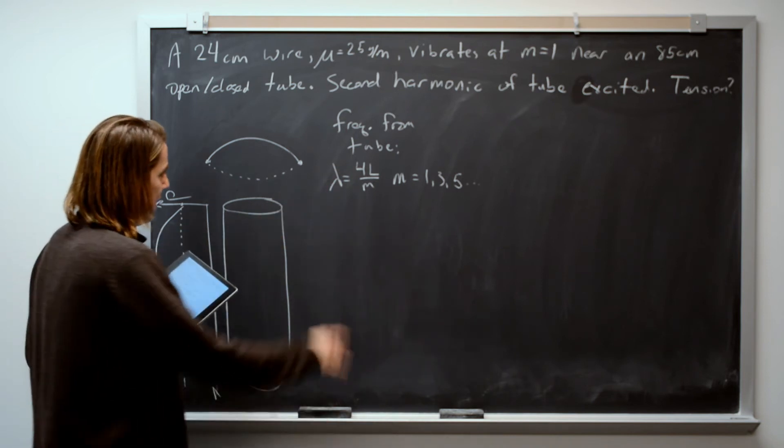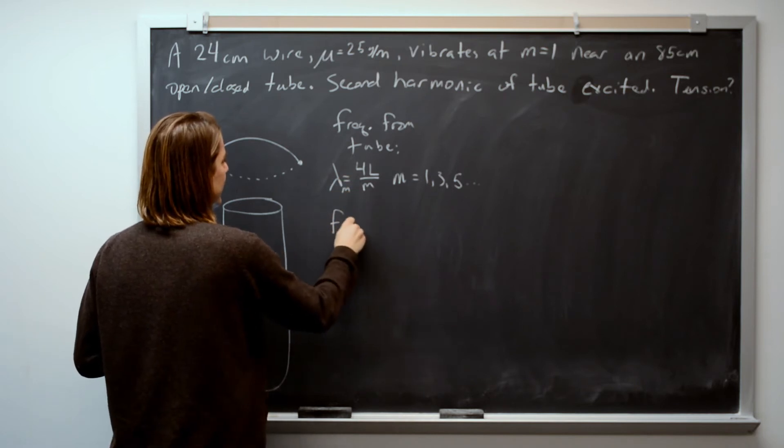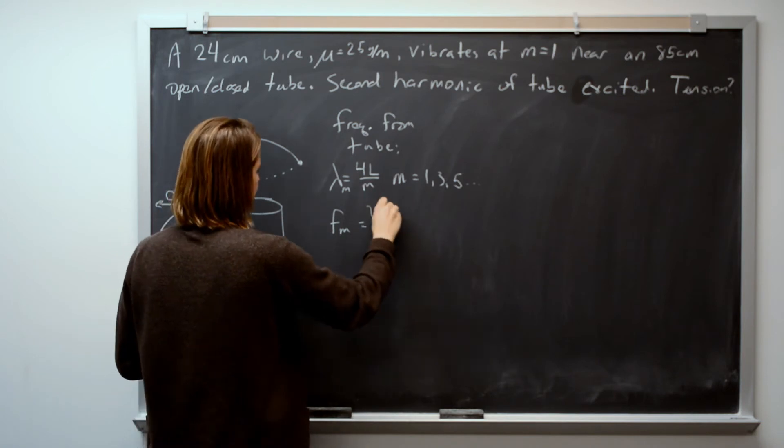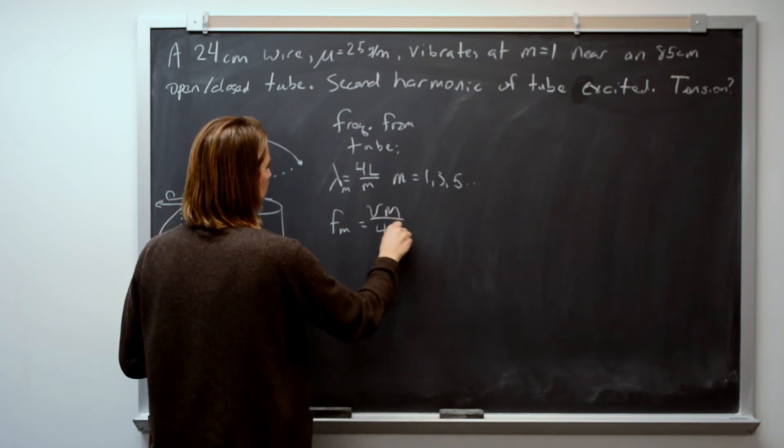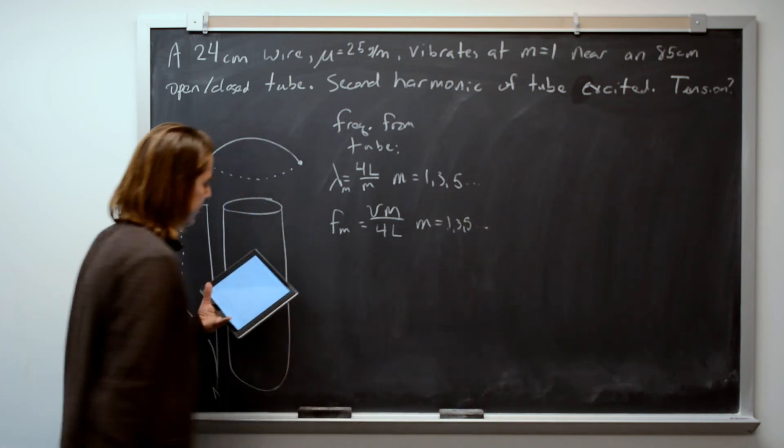So that's the wavelength for some M, but if we wanted the frequency for some M, you always just take the velocity and divide by that. So that would be V M over 4L, M equals 1, 3, 5, et cetera.